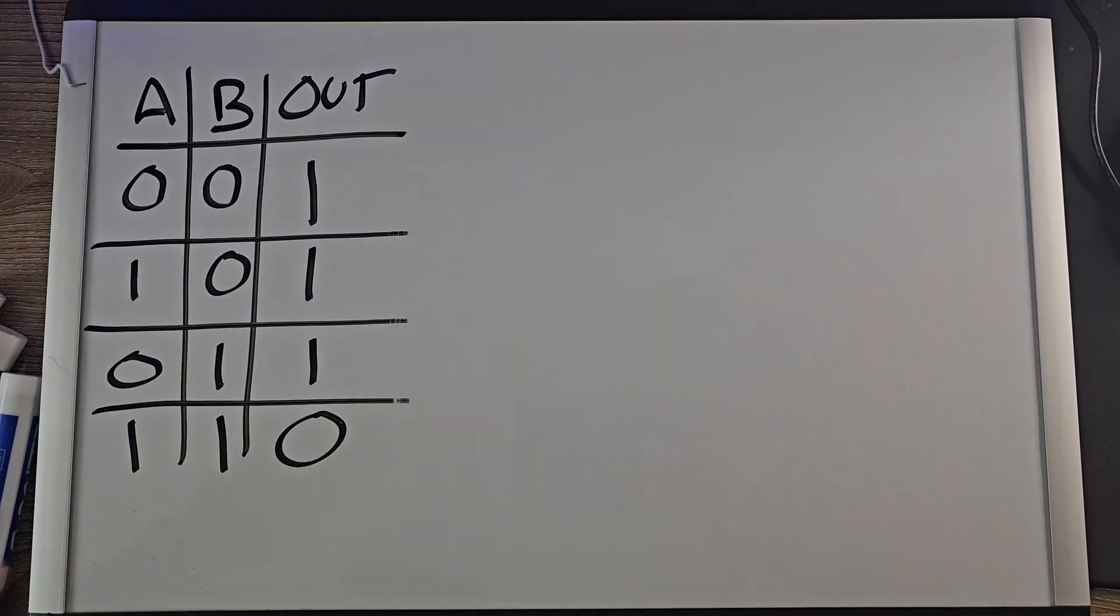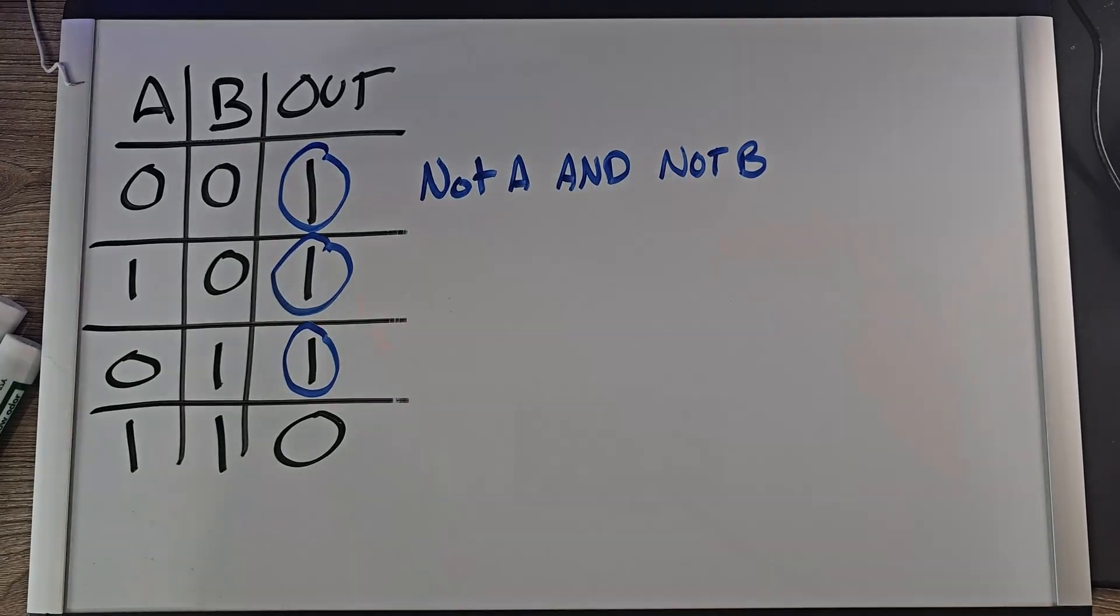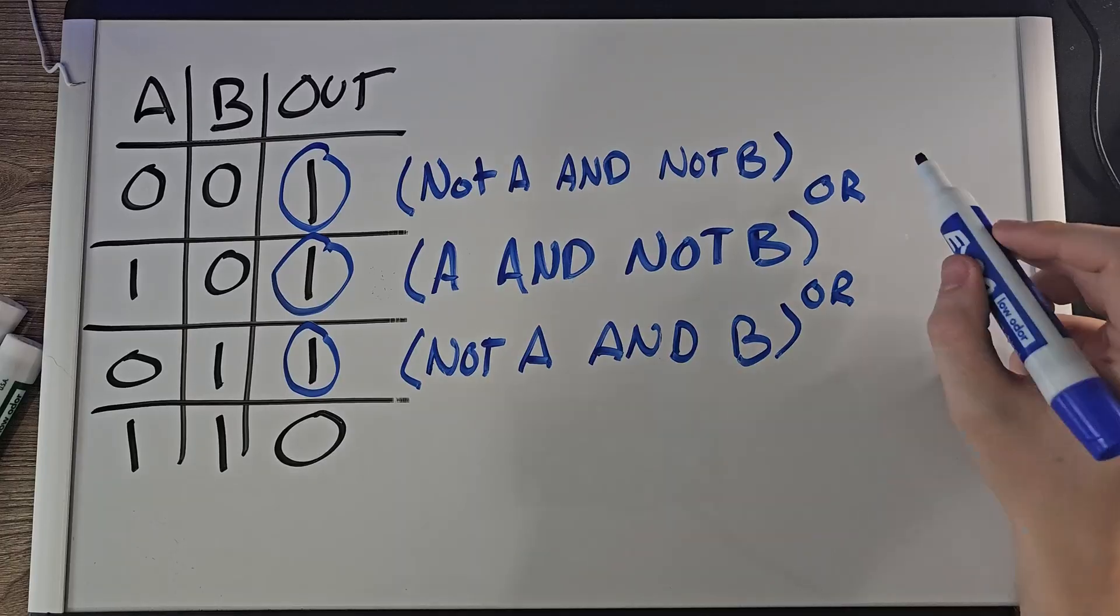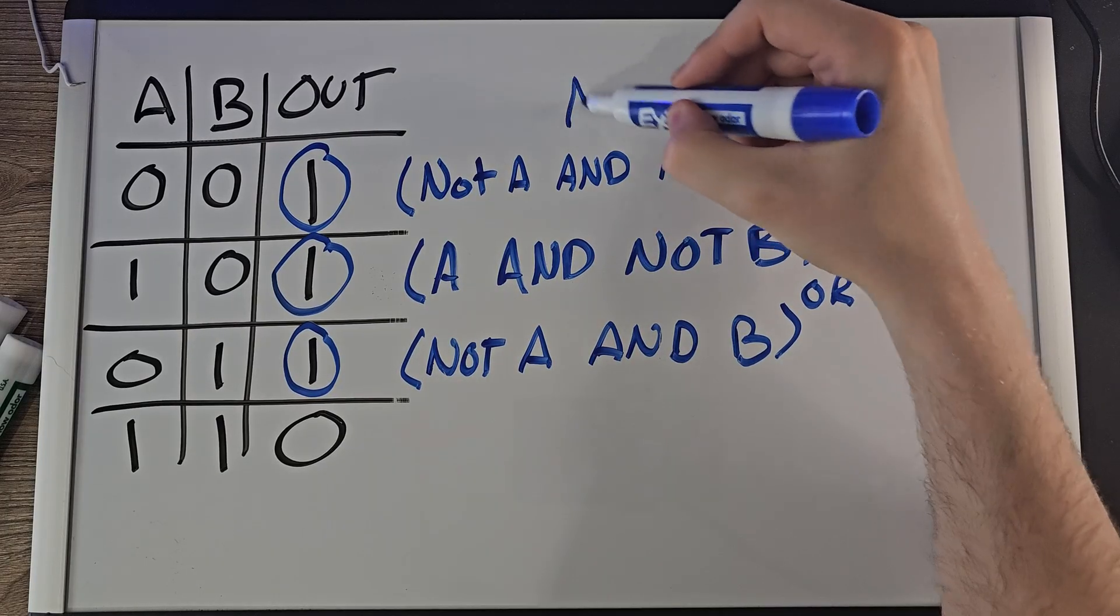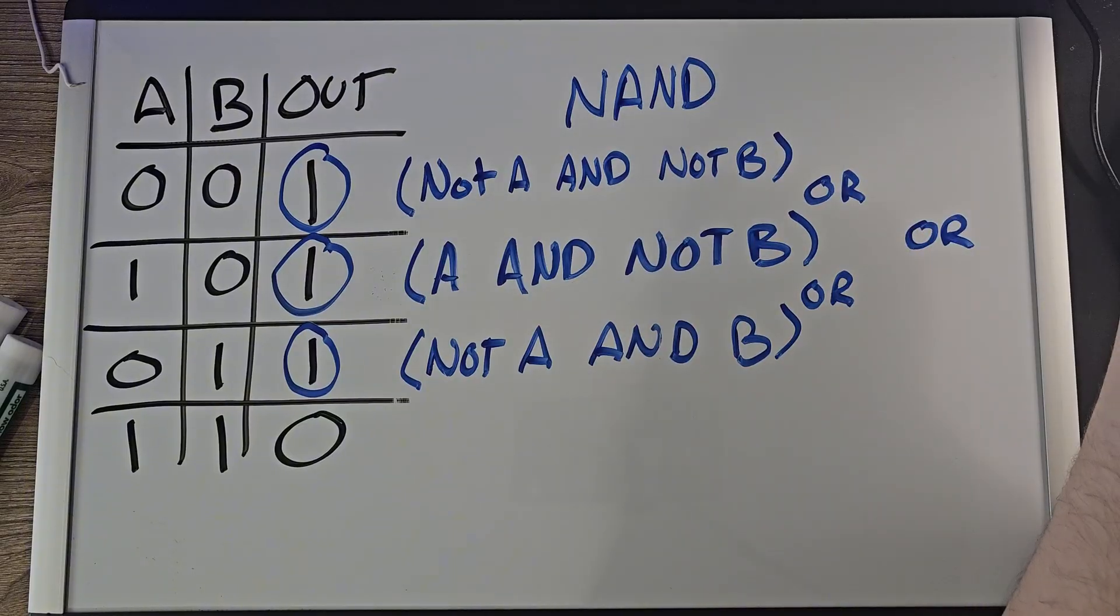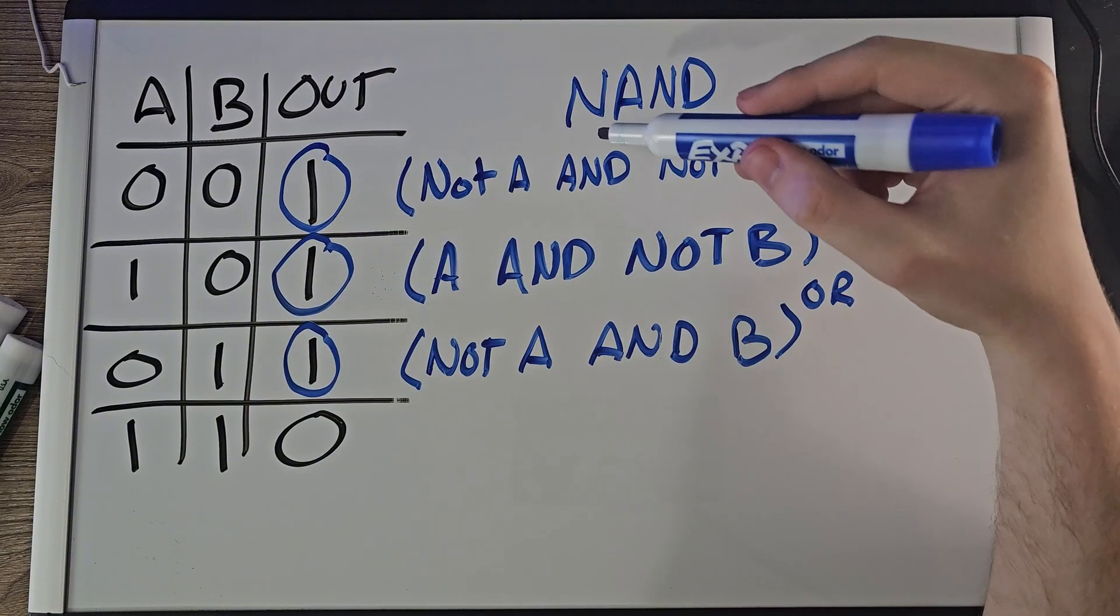Alright, I have another one for you. Let's look at this truth table. We see that we have three ones and only one zero. So we should solve for zero. But I would like to show you the difference between solving for one and zero. This is what's known as a NAND gate. As you can see, solving for one is fairly straightforward. We just say what their values are. But let's solve for zero.